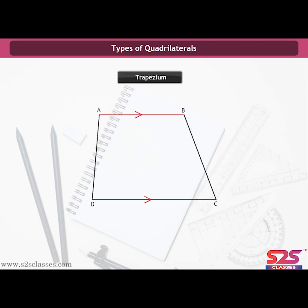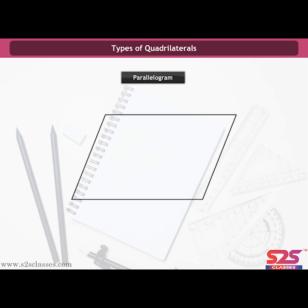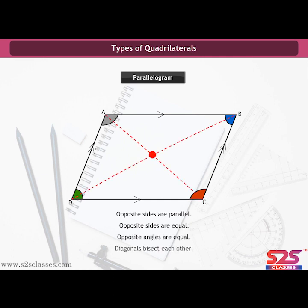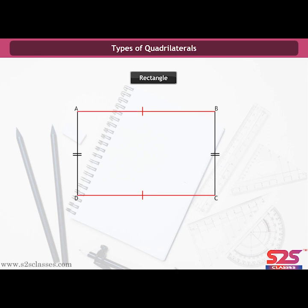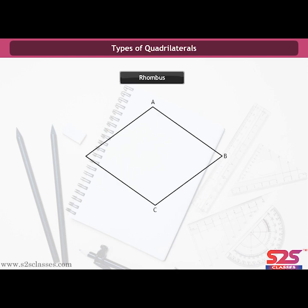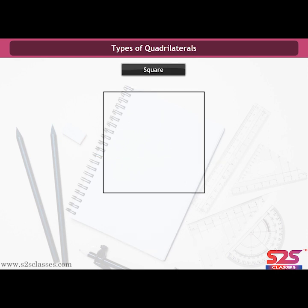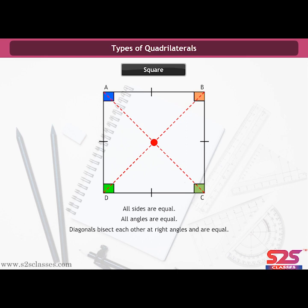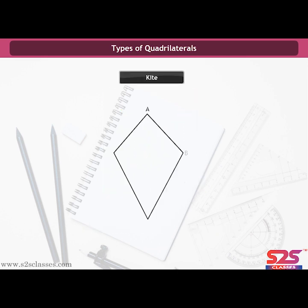A trapezium is a quadrilateral in which one pair of opposite sides is parallel. A parallelogram has opposite sides parallel and equal, opposite angles equal, and its diagonals bisect each other. A rectangle is a parallelogram whose opposite sides are equal, all angles are right angles, and diagonals bisect each other and are equal. A rhombus is a parallelogram whose adjacent sides are equal, and its diagonals bisect each other at right angles. A square is a parallelogram with equal opposite sides, one right angle, and diagonals that bisect each other at right angles and are equal. A kite has adjacent sides equal and diagonals that intersect at right angles.